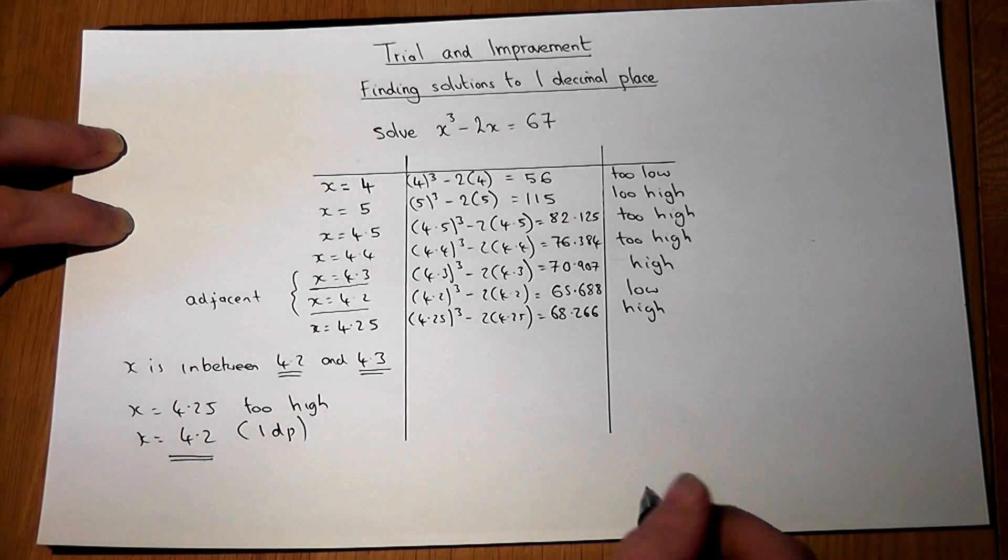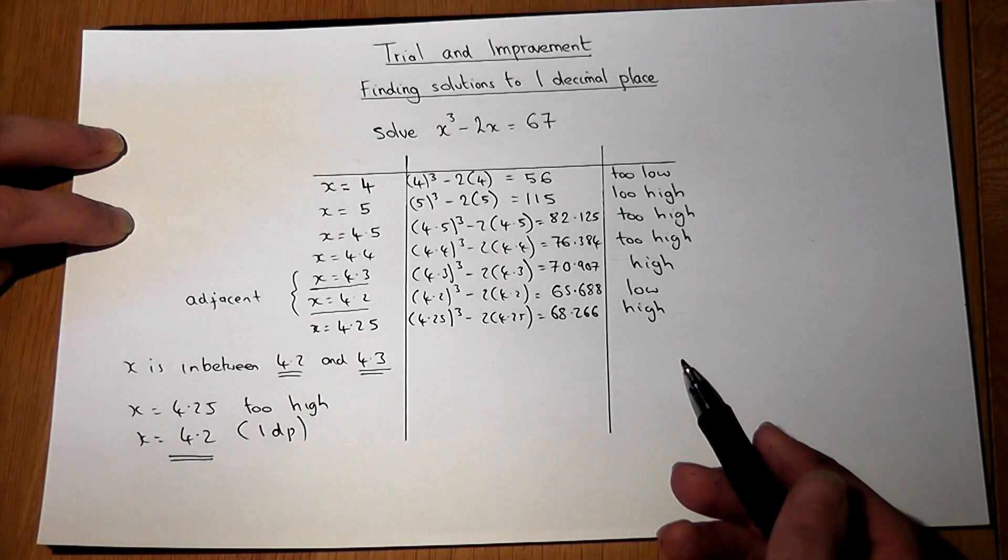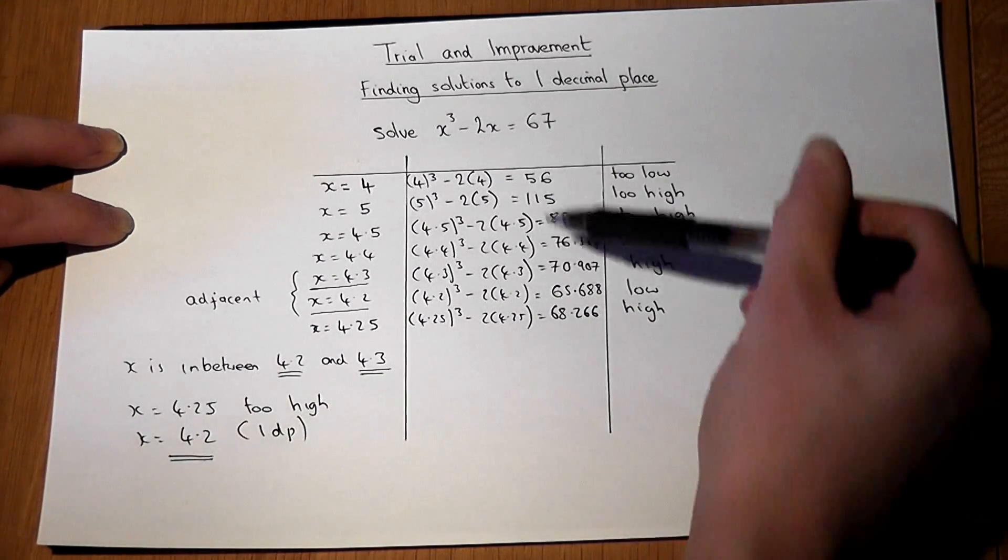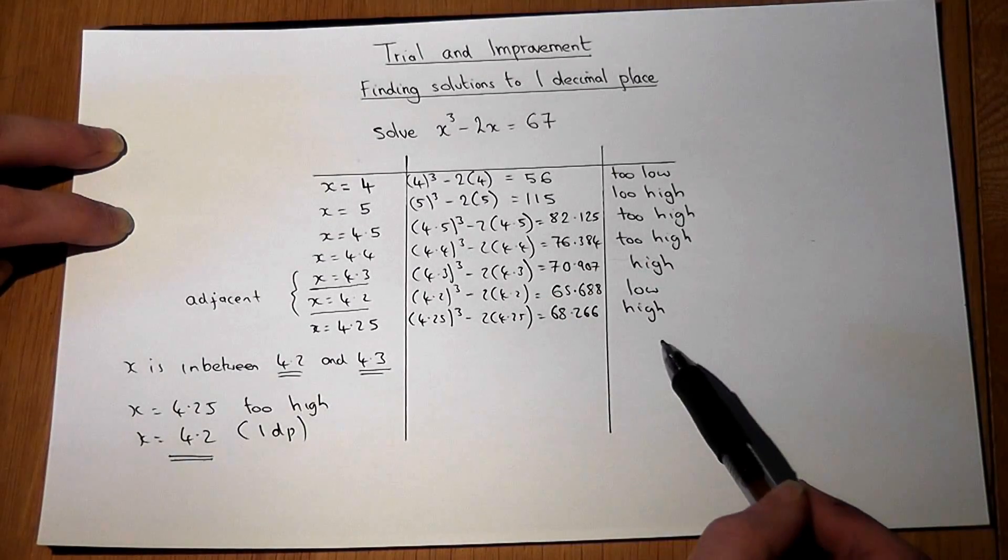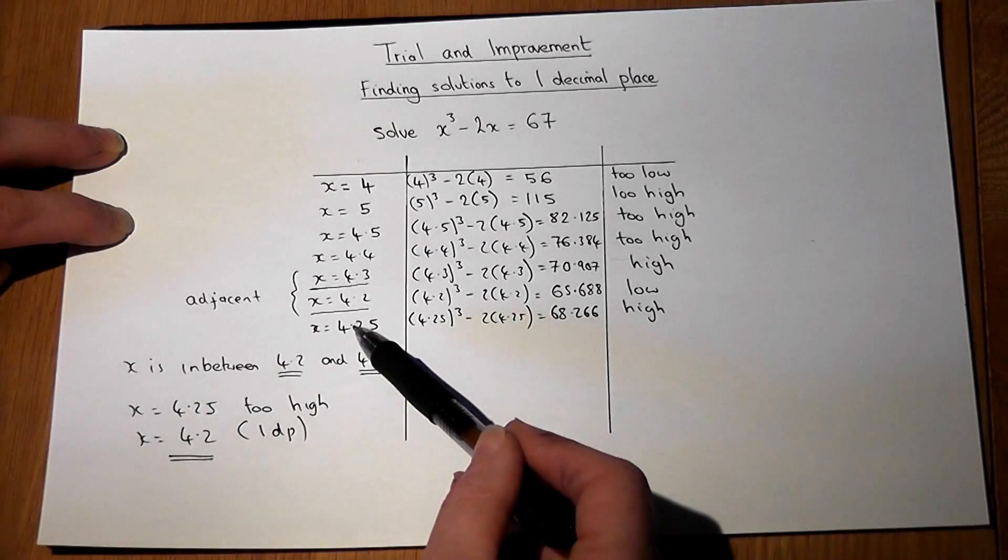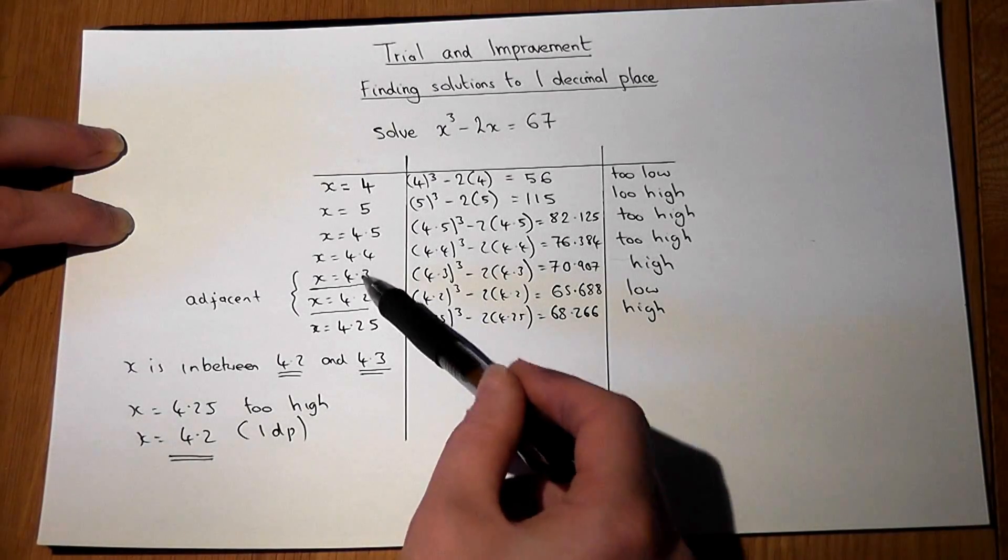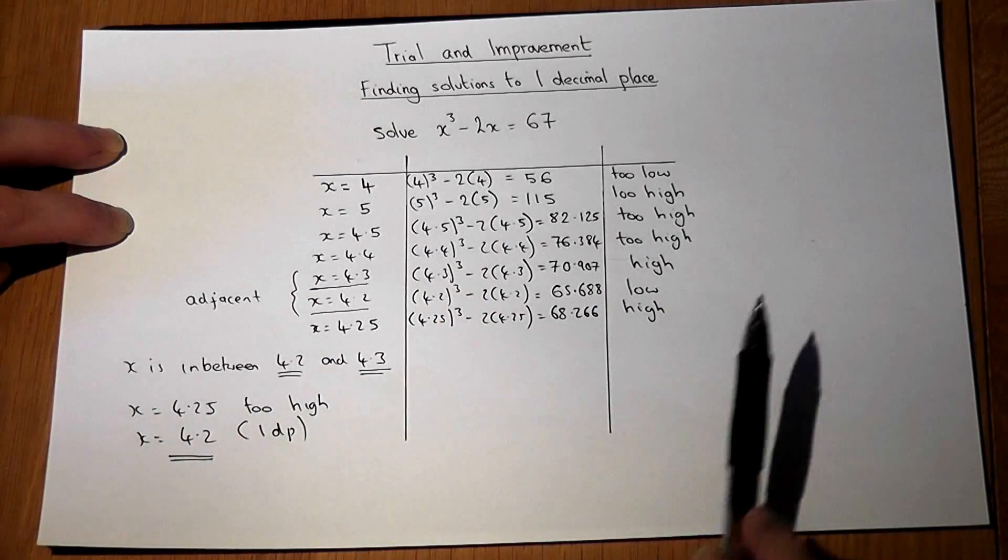Now this question is often worth about four marks. Three of which might be for the progression through to the solution, but the fourth mark is only for that final check in between your two adjacent values of x.